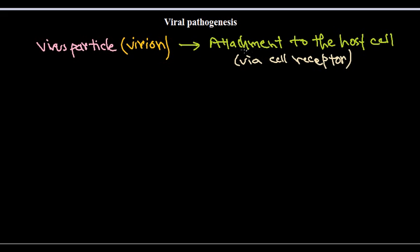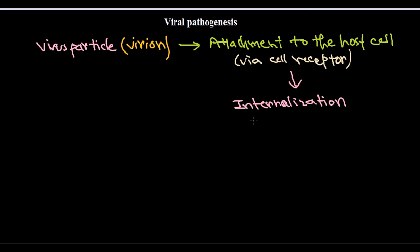The second process is the internalization of that virion inside the host cell, where the virion will convert into a virus or a mature kind of virus. They can be internalized via receptor-mediated endocytosis or via membrane fusion — so there are two processes, which we'll be talking about later.